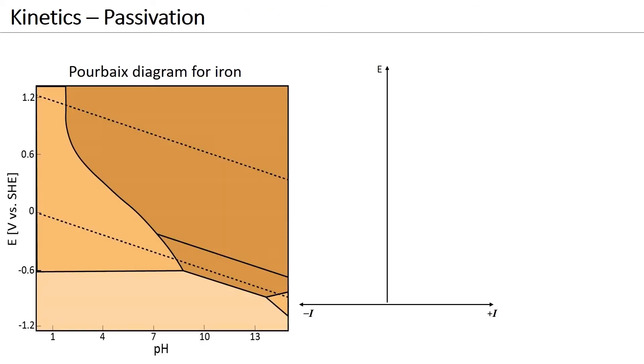Similarly, changes in the anodic reaction kinetics affect the kinetics of the complete corrosion process. As seen in the iron-Pourbaix diagram, in acidic conditions, steel can actively corrode. At high pH, steel is able to form a passive layer.